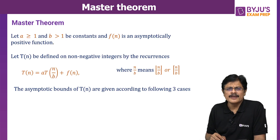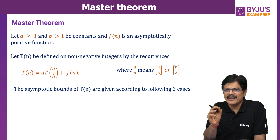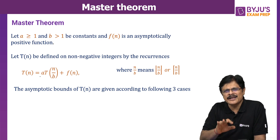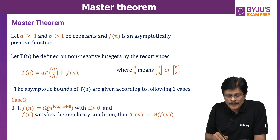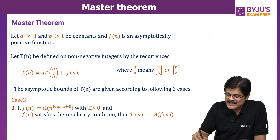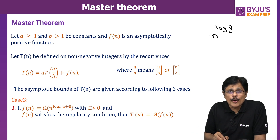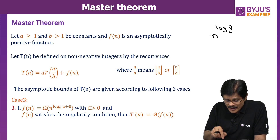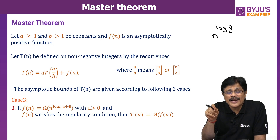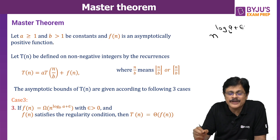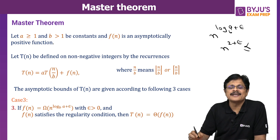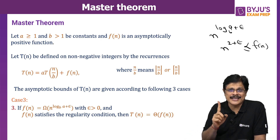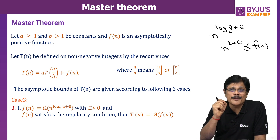Now let us see the third case. The recurrence is still T(n) = A·T(n/B) + F(n), with A ≥ 1, B > 1, and F(n) asymptotically positive. Case 3 applies when F(n) is Ω(n^(log_B A + ε)). Big-Omega here means n^(log_B A) is the asymptotic lower bound for F(n) — and even if you add something to the exponent, it remains a lower bound; F(n) still dominates.